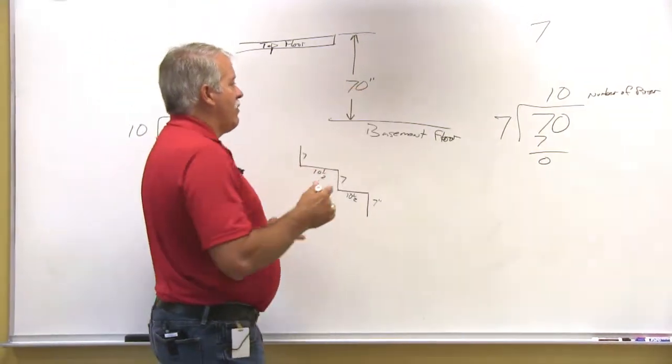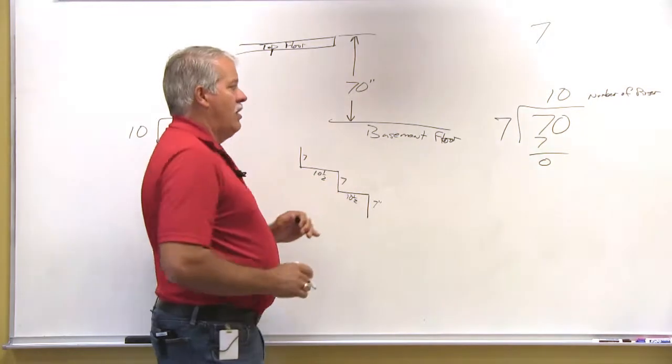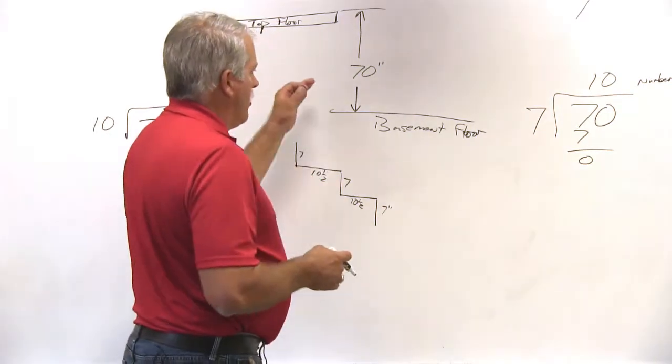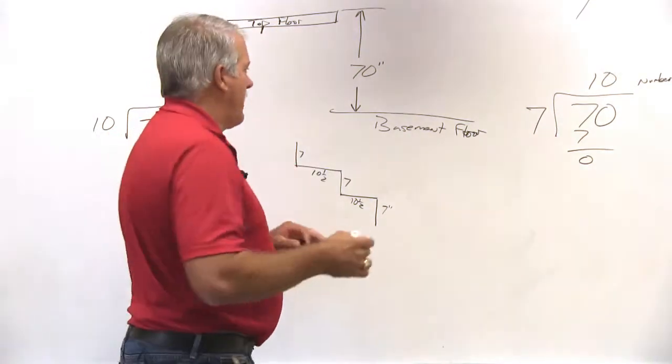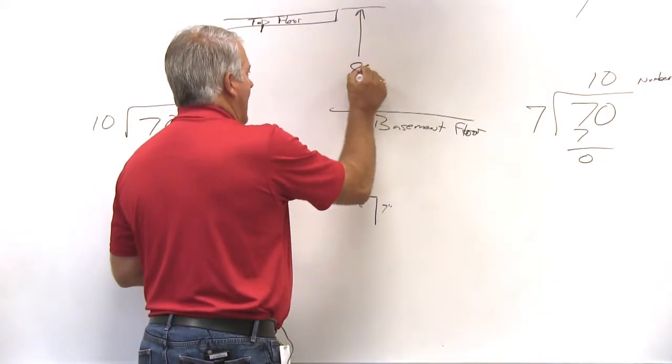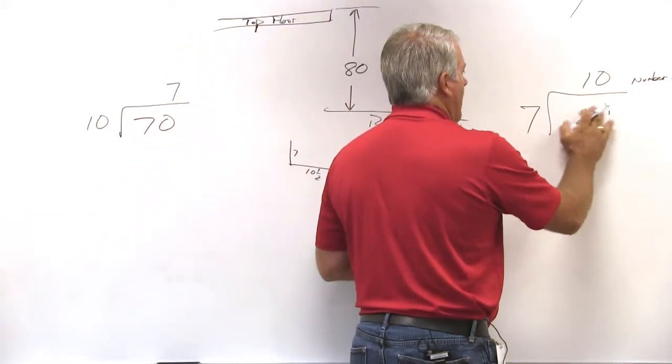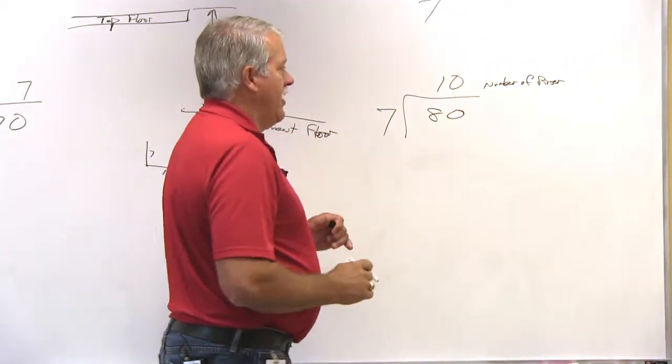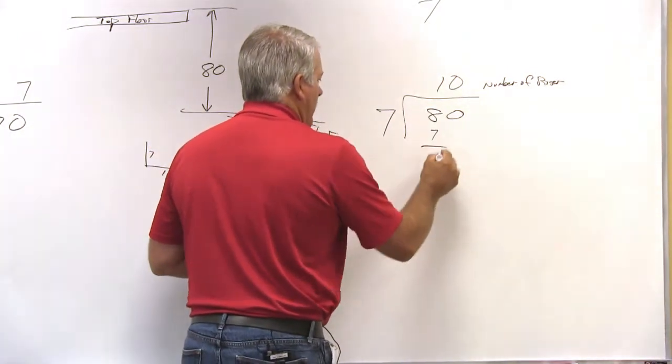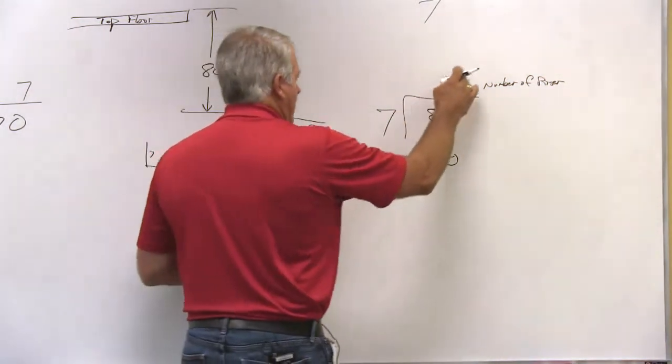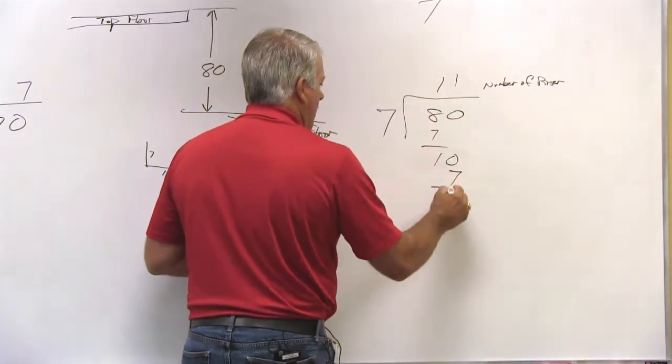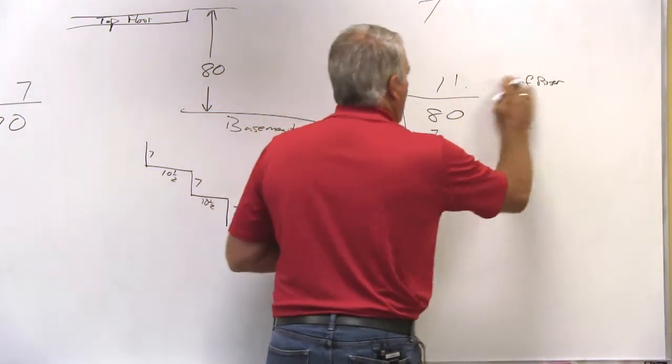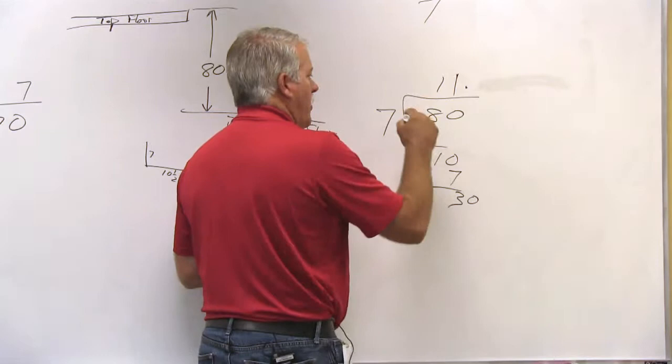Obviously, if this riser height was a different dimension, then we may not come out with an exact number. We'll change this just to see that for this particular principle. If we change this to an 80, then we're going to come over here and change this to 80. We're still going to get 1, but we're going to have 10 left over. So 7 goes into 10 once and we're going to have a decimal point after that.